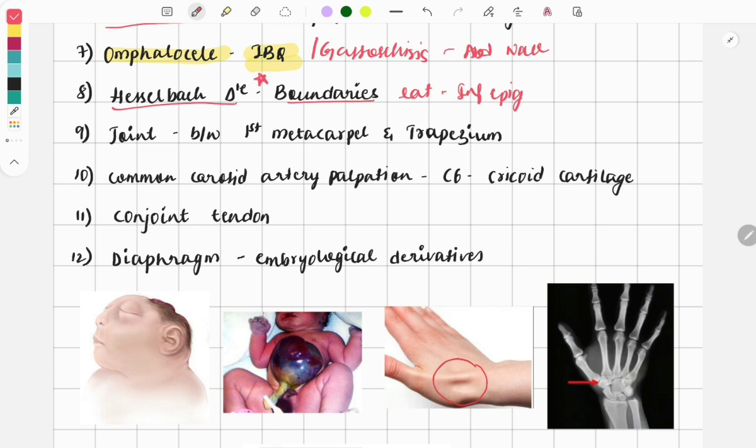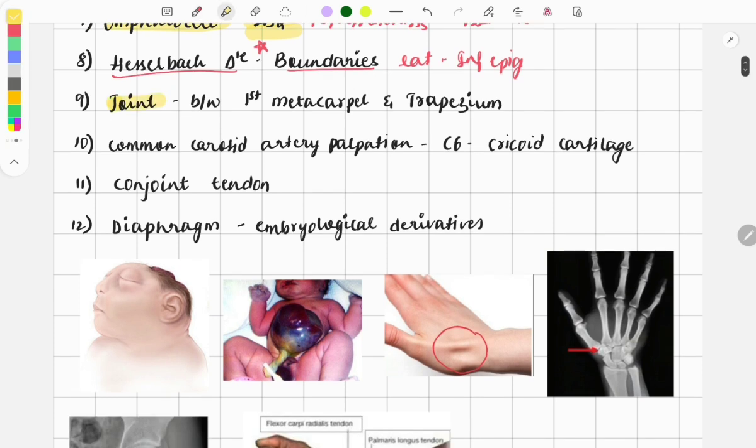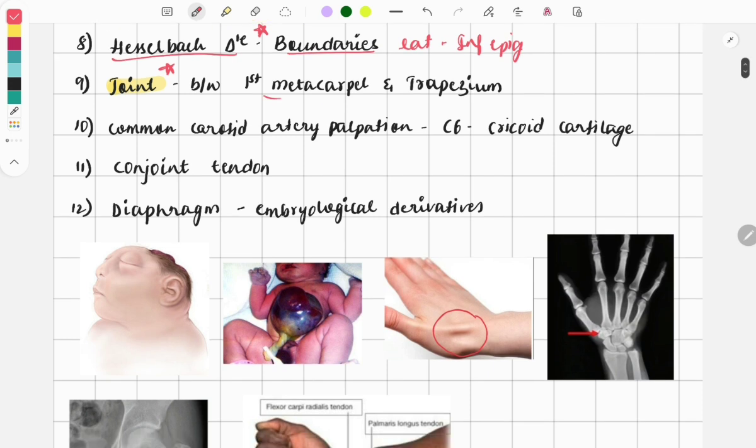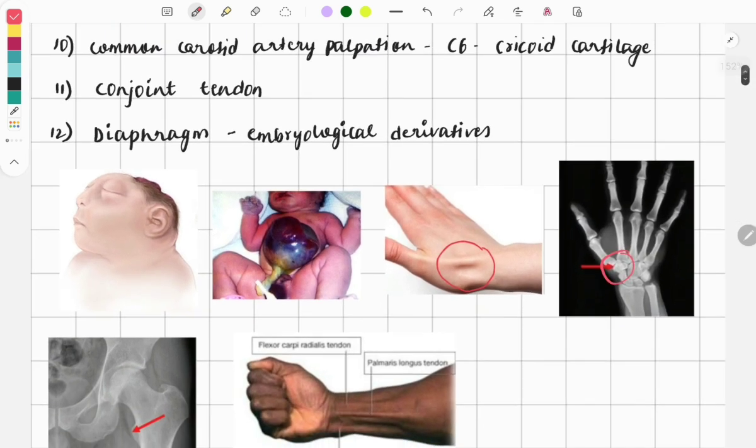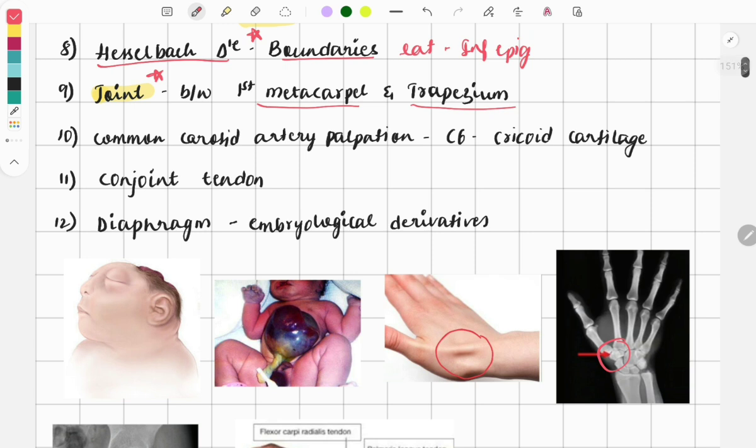The next topic: the joint. Every year from joints, one question is asked, so it is a very important topic. This year the question was asked between the first metacarpal and the trapezium. This image was given and asked which type of joint it is. Likewise, they can ask the joint between the radius and ulna, the pubic symphysis. So joint—a very important topic.